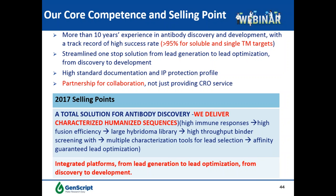Thank you, Dr. Yin, for such an informative talk, and thank you everyone for listening to this webinar. Now it comes to the Q&A session. The first question is: what is the general timeline for antibody drug discovery? That really depends on the target since antibody drug discovery is highly customized on a target basis. But in general, lead identification takes about six to 12 months and lead optimization takes about another six months, so in total lead generation and optimization takes about one year.